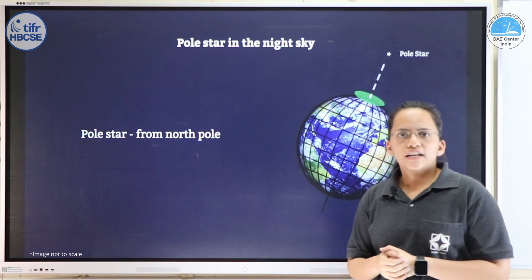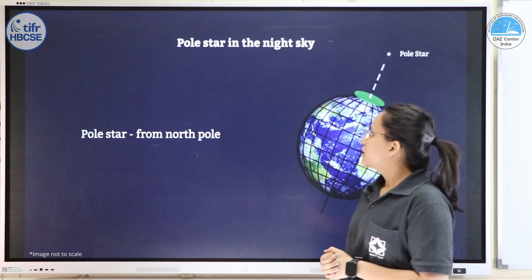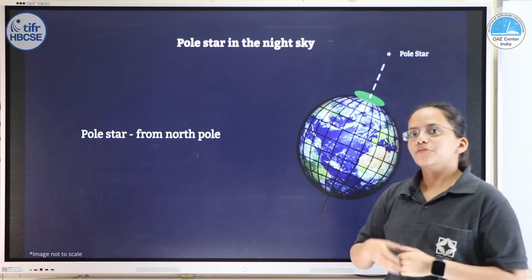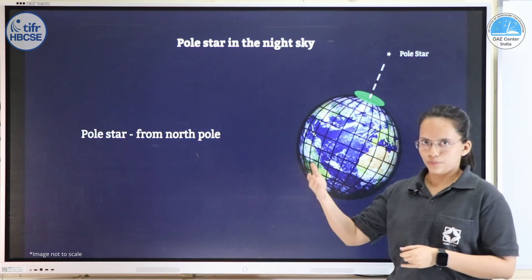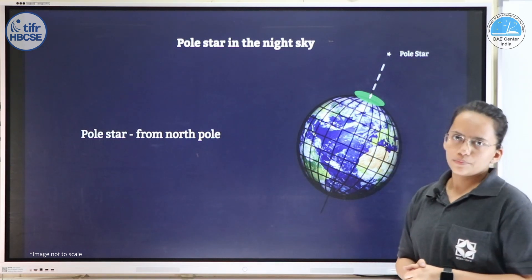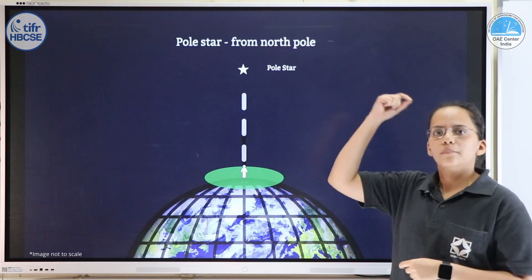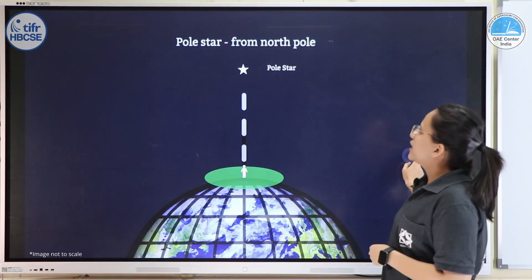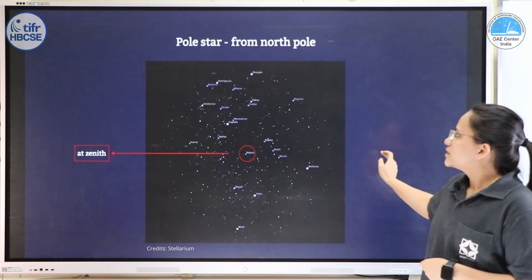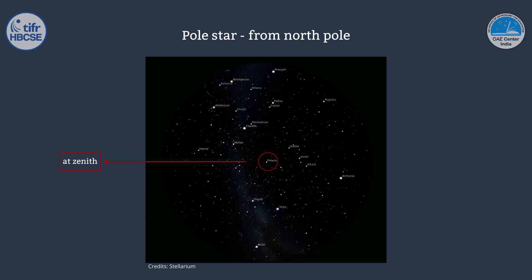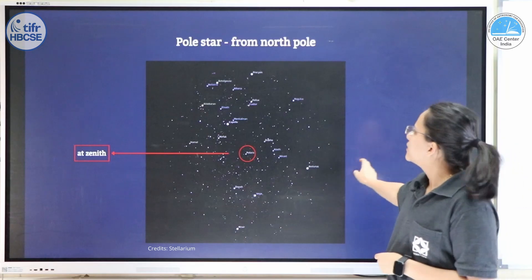Finding the pole star helps us find the north direction, but where will the pole star be seen from different locations on earth? If we go to the north pole and look above in the sky, the pole star will be exactly above at zenith. Imagine you are at the north pole lying on the ground looking up — the pole star will be right at the top of your head, at zenith.